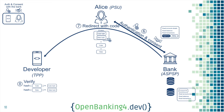Once she approves the request, the bank redirects Alice back to the developer through the callback registered at dynamic registration. The TPP receives an ID token signed by the bank, containing a code hash and state hash, plus a code — the token we were talking about earlier — and a state, which lets you retrieve the context from the initial request. The ID token is signed, so the hash allows the TPP to verify that the code hash signed by the bank matches the code — it's a security verification step.